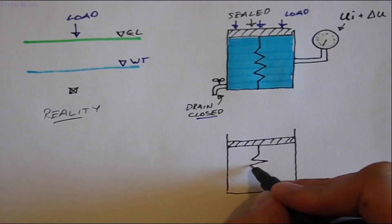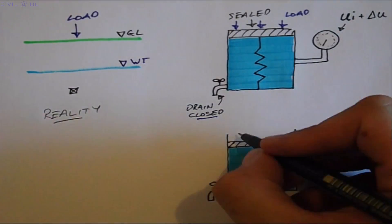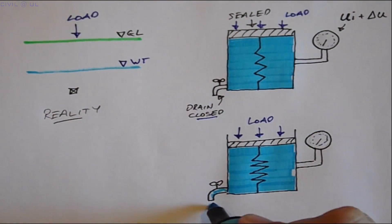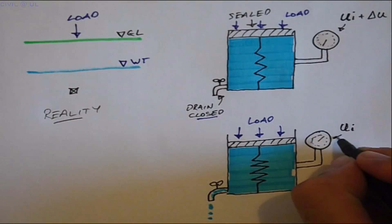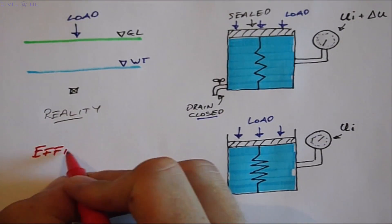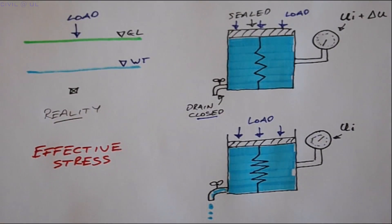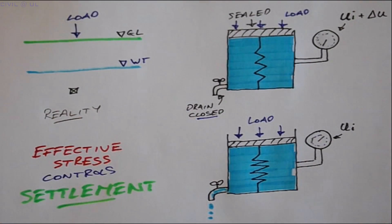If the drain is now opened by an amount equal to the permeability of the soil, the water pressure slowly dissipates and the pressure gauge gradually reverts back to its initial value, as the load from the piston is gradually transferred to the spring, causing it to compress. This, of course, is another way of expressing effective stress and the fact that all changes in soil behaviour — settlement in this case — is controlled by changes in effective stress.